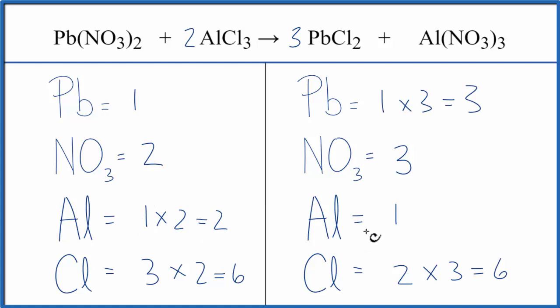Let's just fix the aluminum. We have 2 here, 1 here. Put a coefficient of 2 in front of the aluminum nitrate. 1 times 2, that gives us 2. So the aluminums are balanced. And the 2 applies to everything. So we have 1 nitrate times 3. That gives us 3 nitrates times the 2. 6 nitrates.